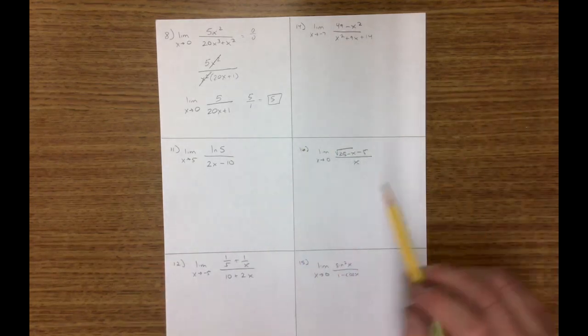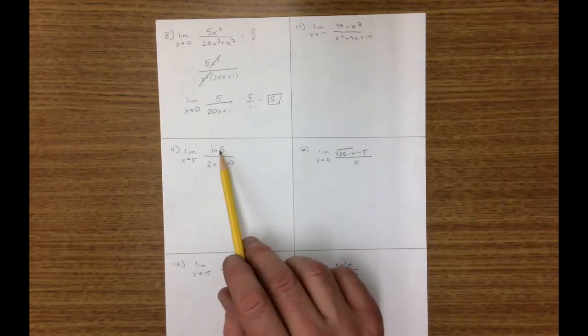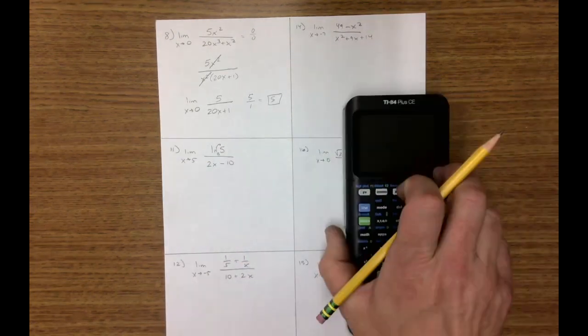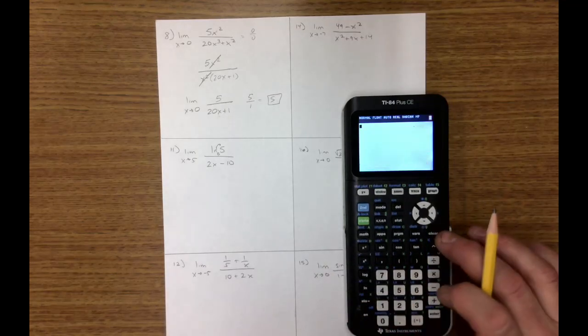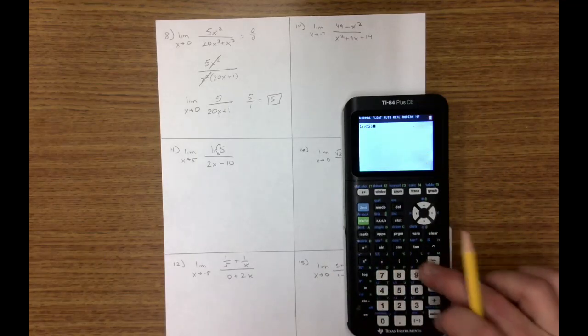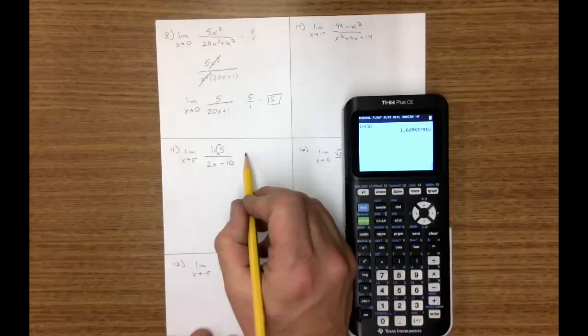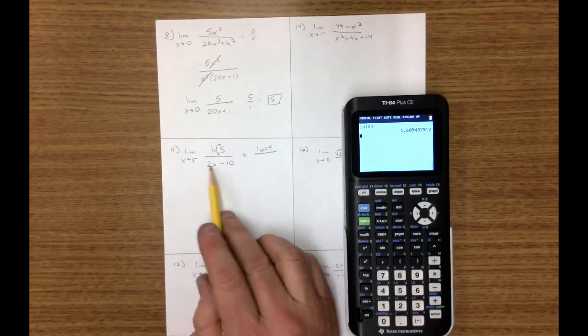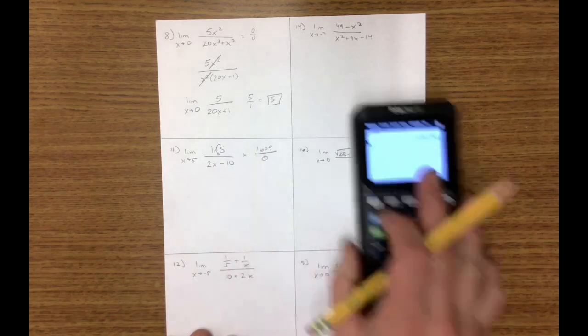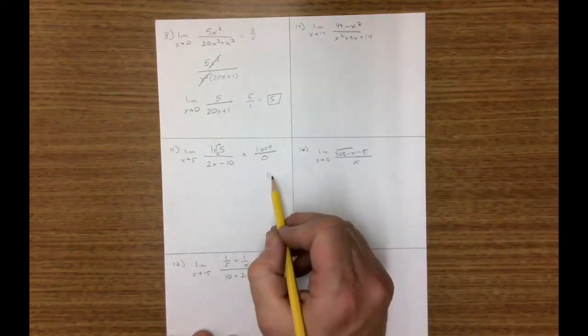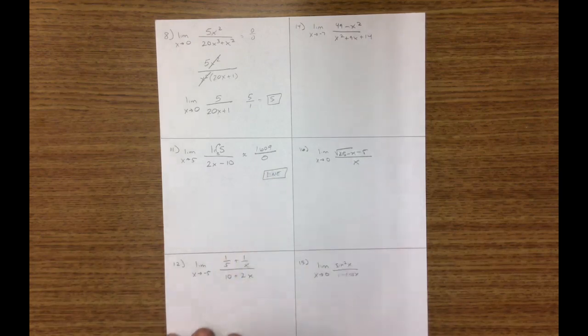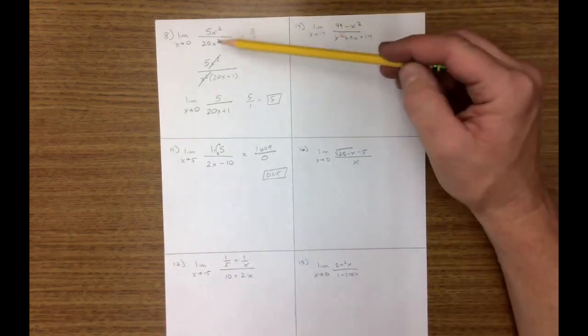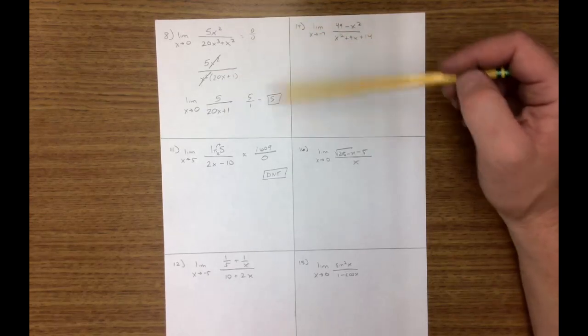However, on the second one, take a look at this. I have ln of 5, which means if I have a base e, what exponent do I need? Let me get my calculator because I don't think that's a nice number. So I have about, on the numerator, I have about 1.609. On the denominator, I'm going to have a 0. This means something. This means that there is no limit in this problem. I'm not going to be able to factor it. I'm not going to be able to do some algebra, and I'm never going to be able to substitute it. There is no limit.